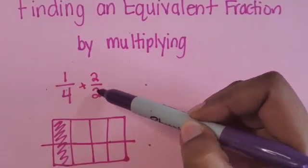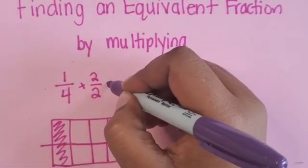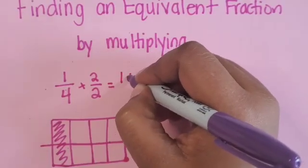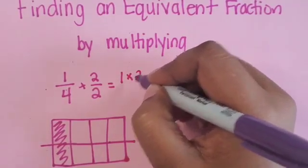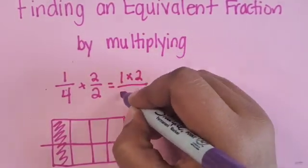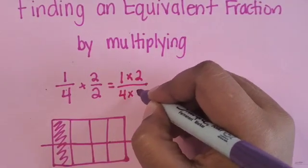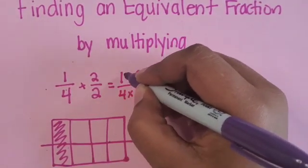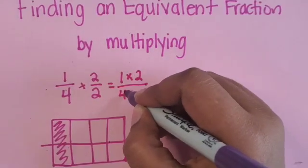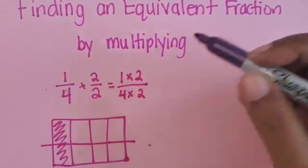So we're going to multiply 1/4 times 2/2. We can also write it this way where 1/4 times 2 is going to be our new numerator, and 1 times 2 is our numerator and 4 times 2 is our denominator.